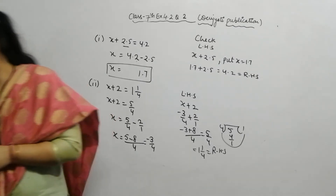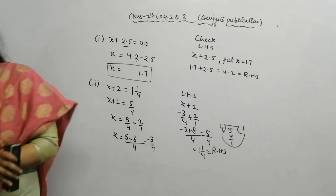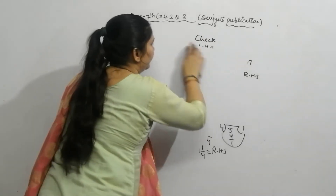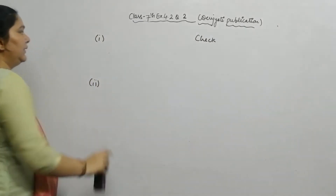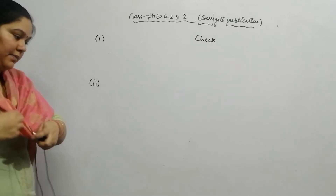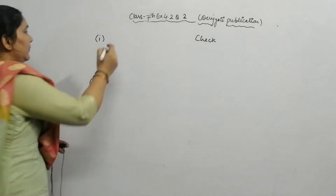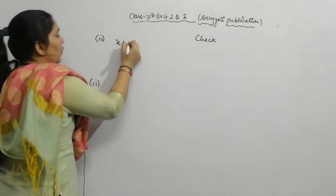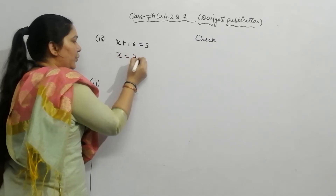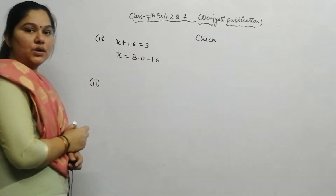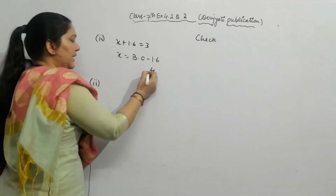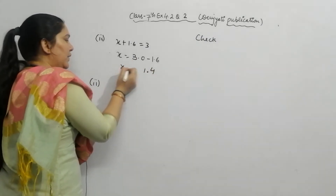Let's start Part 3. Part 3 says: x plus 1.6 is equal to 3. Since 1.6 is in addition, it goes to the right as subtraction. So x equals 3.0 minus 1.6. Borrowing: 10 minus 6 is 4, decimal as is, and 2 minus 1 is 1. So x is equal to 1.4.